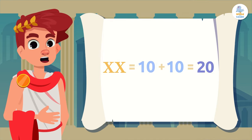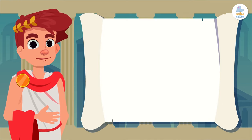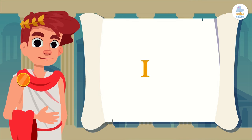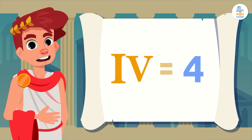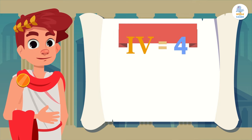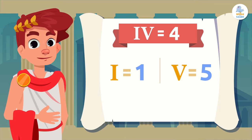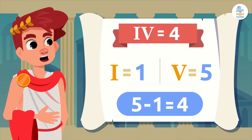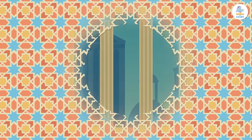Let's see an example of how subtraction is used in Roman numerals. The letters I and V represent the number 4. Since the I is to the left of the V, we subtract its value from that of the V. The value of V is 5 and the value of I is 1, so we subtract 5 minus 1 to get the number 4.